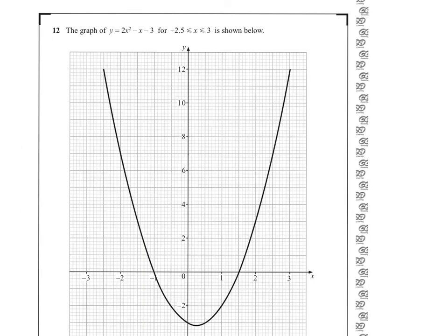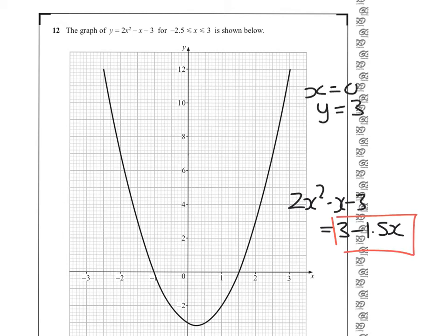We've been asked to use this graph to solve when 2X squared minus X minus 3 equals 3 minus 1.5X. That means we want to draw this line onto the graph. So when X is 0, Y is 3 take away 1.5 times 0, which is 0, so that's 3. When X is 1, Y will be 3 take away 1.5, which is 1.5. And when X is 2, Y will be 3 take away 3, which is 0.